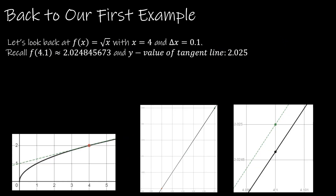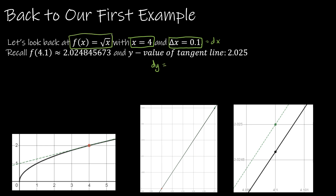Now let's go back to our first example. We had f of x equals radical x, using x equals 4, and delta x equals 0.1 — because we went from x equals 4 to x equals 4.1, so 4.1 minus 4 gives 0.1, and that's our delta x which is the same as dx. Let's find dy using our function. Since f of x is really x to the 1/2, dy equals 1/2 times x to the negative 1/2, times dx.